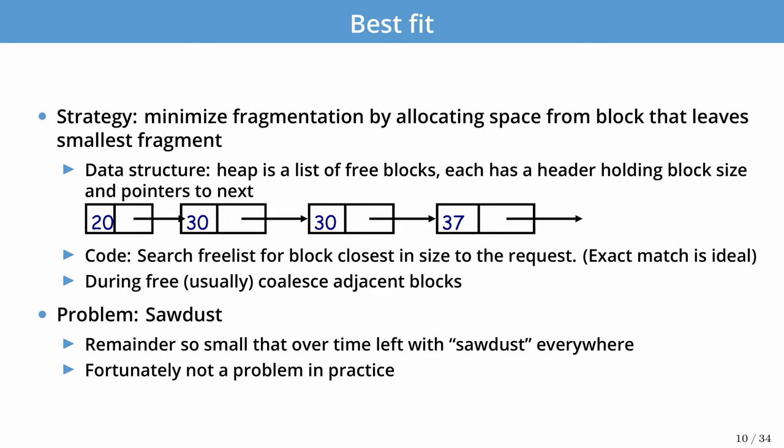The best fit strategy minimizes fragmentation by finding the block that leaves the smallest fragment. The data structure for the heap is just a linked list of all free blocks, with a header that has the size of the block and a pointer to the next block. The code simply scans this linked list looking for the block with the closest size to the actual request. If we find an exact match, we return immediately; otherwise we scan to the end finding the closest match. During free, we try to coalesce any adjacent blocks so we have the largest possible block in the free list.